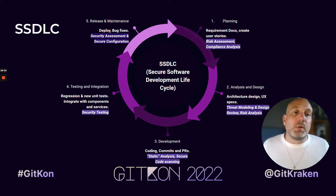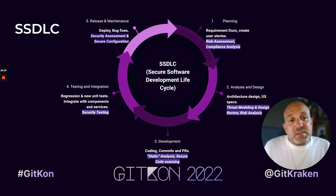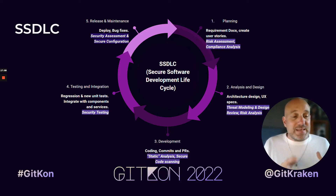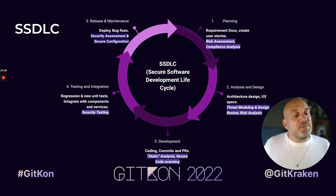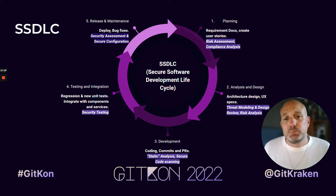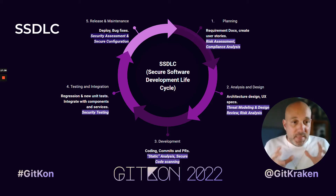That fifth stage is when you can inject a bug bounty program or pen testing. This is the software development lifecycle and where you should inject different stages of security. You want to push security as far left as possible. It saves you money as a developer because once something gets deployed, you have to context-switch out of development to fix a security bug found in the field or by a bug bounty program. Finding everything important to you at stage three is really the sweet spot.